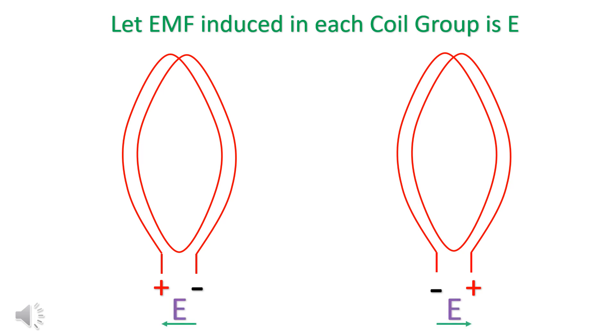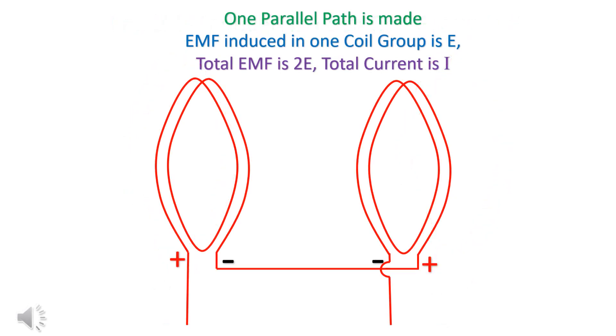EMF induced in each coil group is E. The total EMF is 2E and the total current is I.